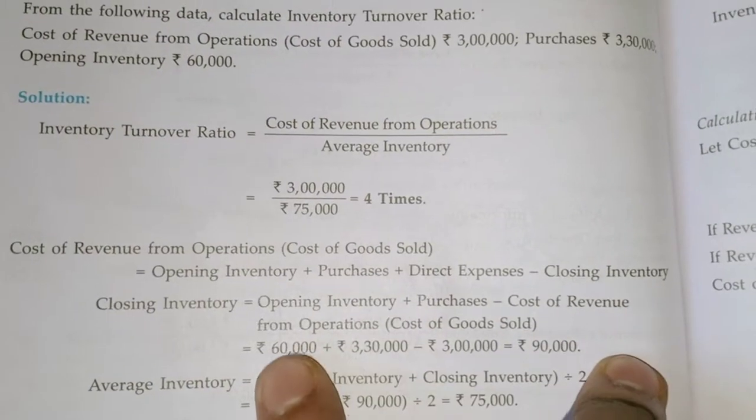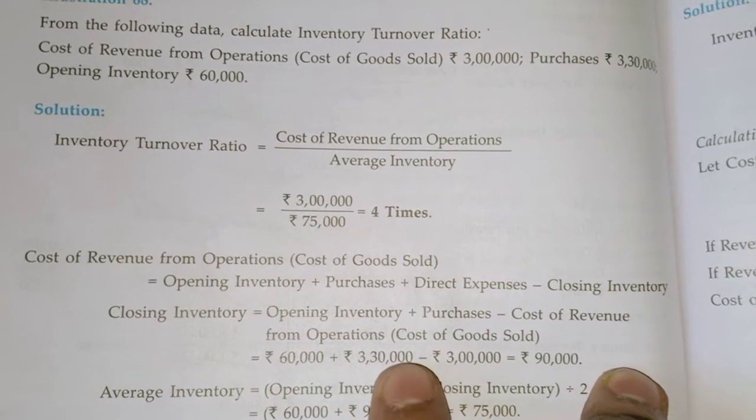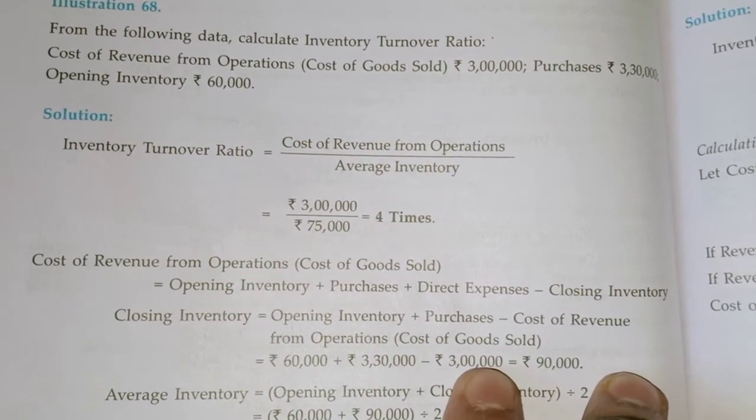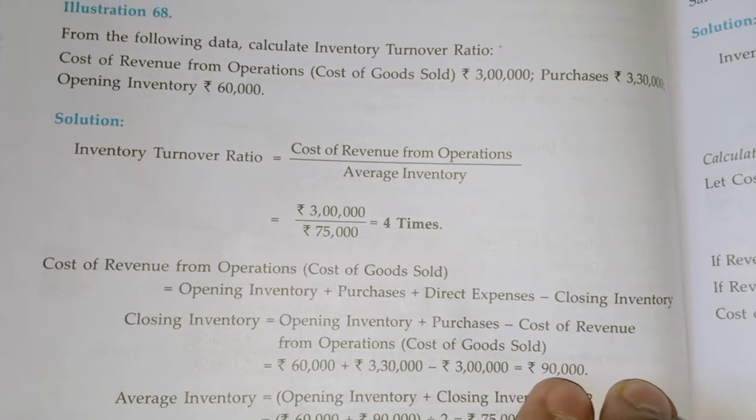So, Opening Inventory is 60,000, Purchases are 3,30,000, and Cost of Revenue from Operations is 3,00,000. This gives us the Closing Inventory.